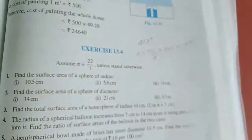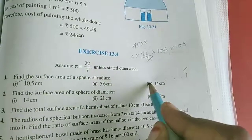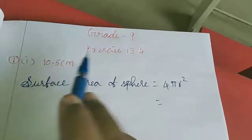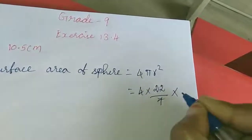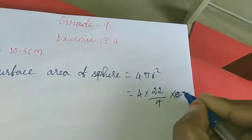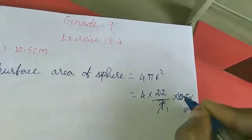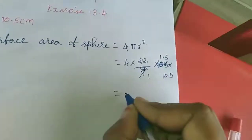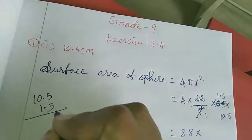Now I am going to apply the formula here. Cancelling: 7 with 7 gives 1. Carrying forward: 4 × 22 = 88, then multiplying by 1.5 and 10.